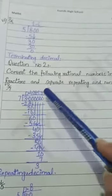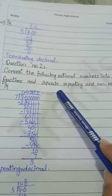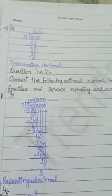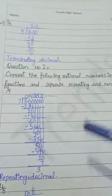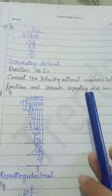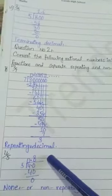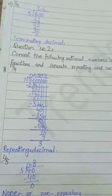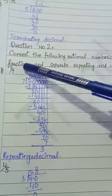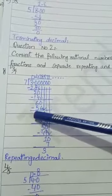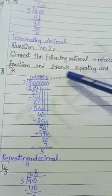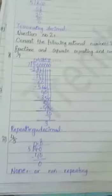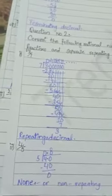Pichle question ki tarah hum divide karenge. Agar answer non-stoppable hai, aage chalta ja raha hai, toh yeh kya hoga? Repeating — kyunki value baar baar aa rahi hai. Yeh repeating decimal hai. Lekin agar answer full full chala gaya, repeat nahi ho raha, toh woh non-repeating decimal hai. Value andar rakhni hai, neeche bahar rakhni hai, divide karo — non-stoppable hai, aage values aati ja rahi hain toh repeating decimal. Jabke 4 by 5 dekhen — full chala gaya, toh yeh non-repeating decimal hai.